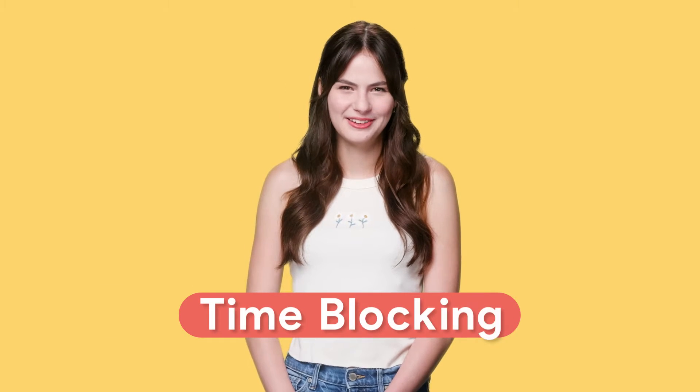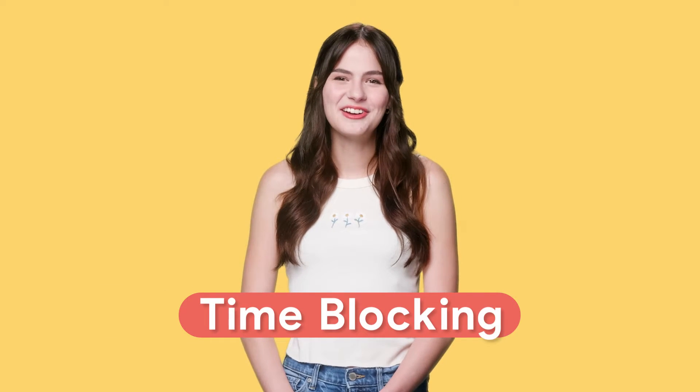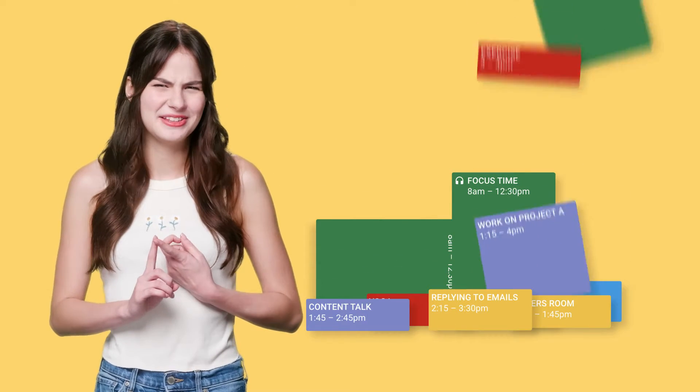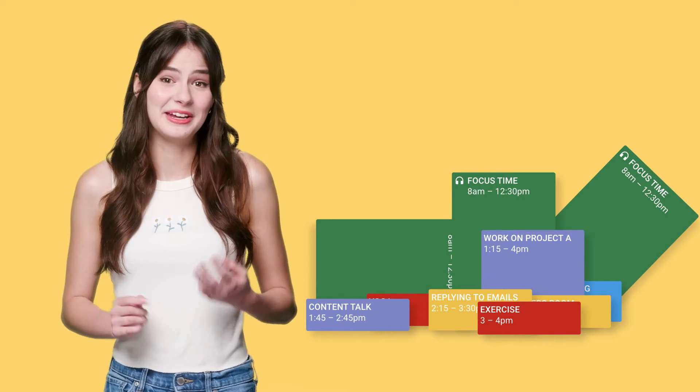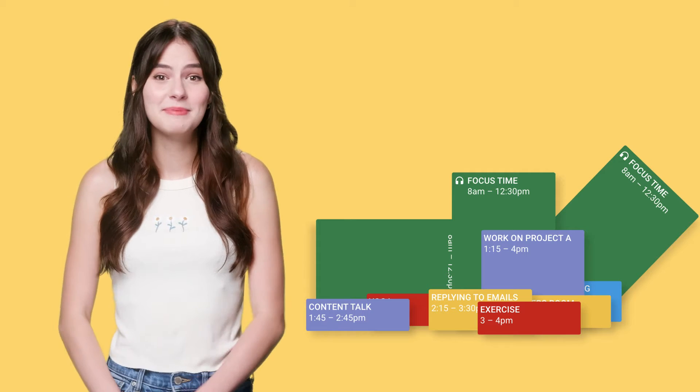The first tip is called time blocking. At the start of each week, I put everything on my calendar, from assignments to meetings to email maintenance. I'm able to schedule in my to-do list for the week by assigning dates and times and tasks directly in my calendar.